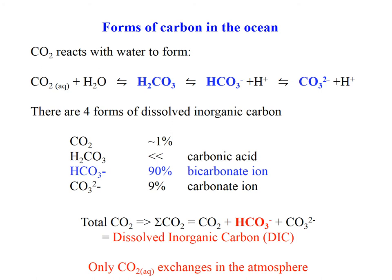When you dissolve CO2 in natural waters like the ocean or river waters, most of the carbon is actually not as dissolved CO2 — it's as the bicarbonate ion (HCO3⁻). We have the term 'total CO2', which is a little confusing because it's not just CO2 — it's CO2 plus bicarbonate plus carbonate. This is sometimes referred to as total dissolved inorganic carbon, which has the acronym DIC.